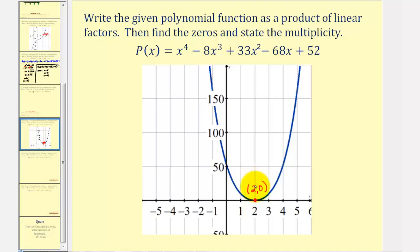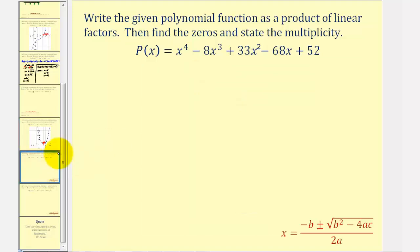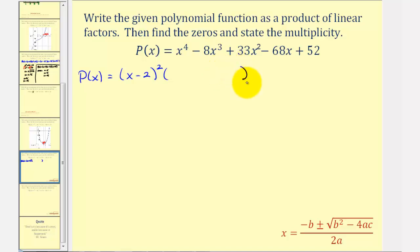If x equals two is a zero, then x minus two is a factor. Since we have a degree four polynomial, x equals two has either multiplicity two or multiplicity four. Let's begin by assuming multiplicity two, meaning we can write p(x) as x minus two squared times a degree two factor. To find that degree two factor, we'll divide the polynomial by x minus two twice.